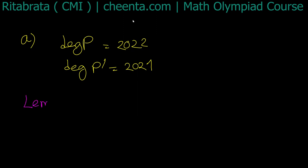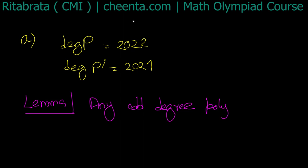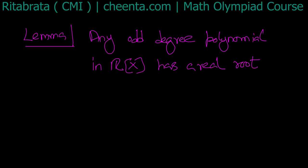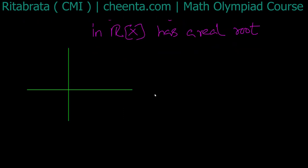An odd-degree polynomial with real coefficients has a real root. This is because a polynomial is continuous and has the intermediate value property. Mainly, the limit as x tends to minus infinity and plus infinity — let's look at the behavior of P of x.